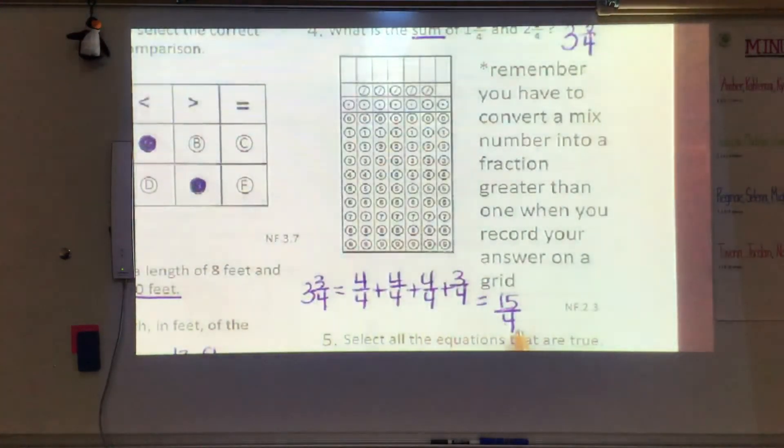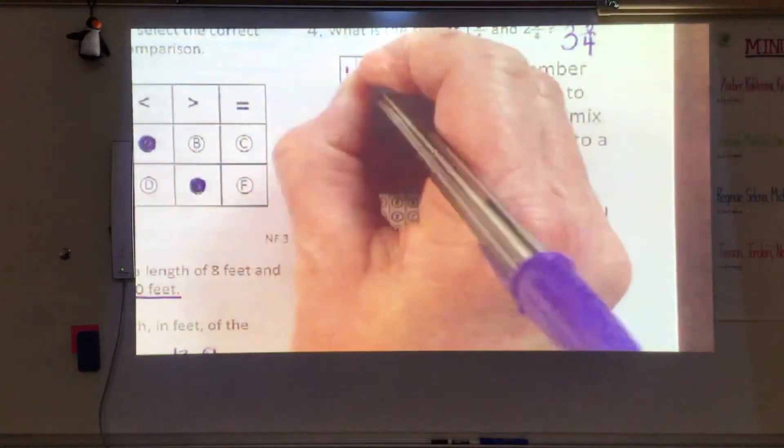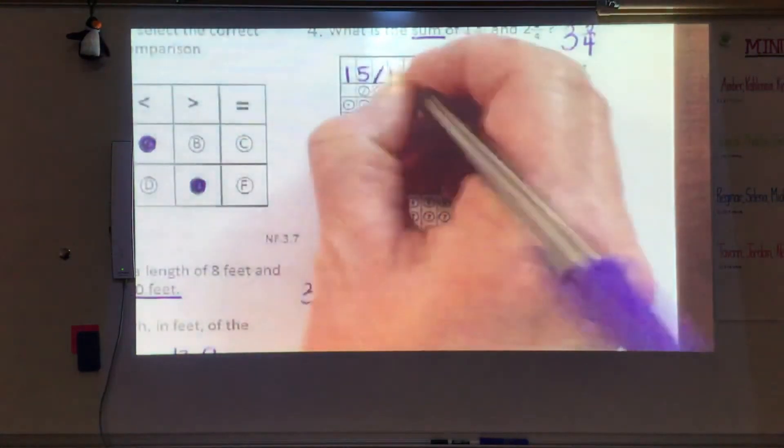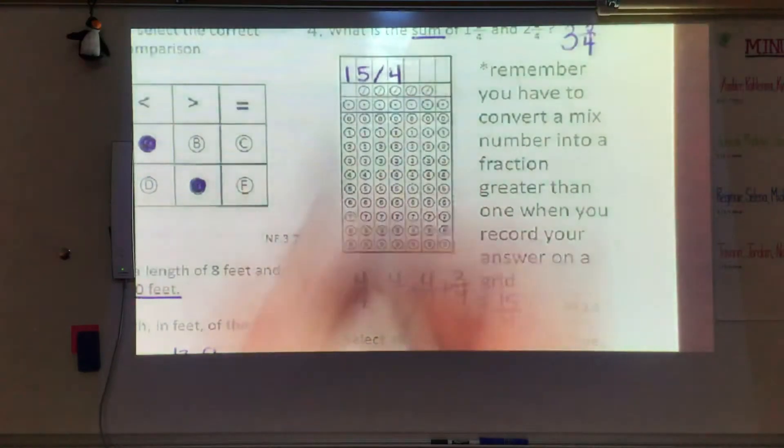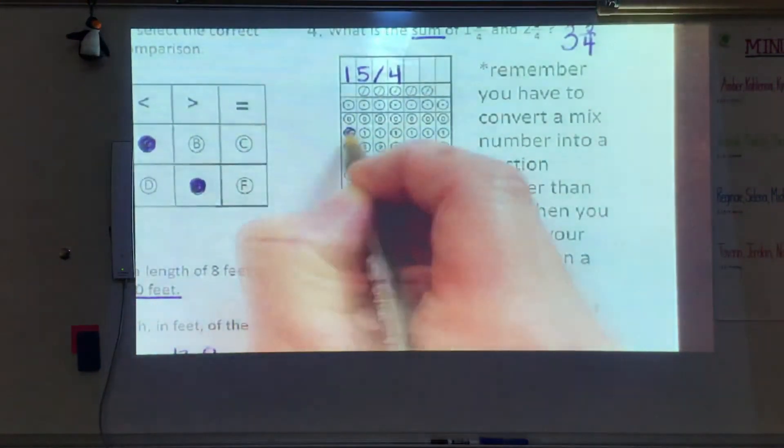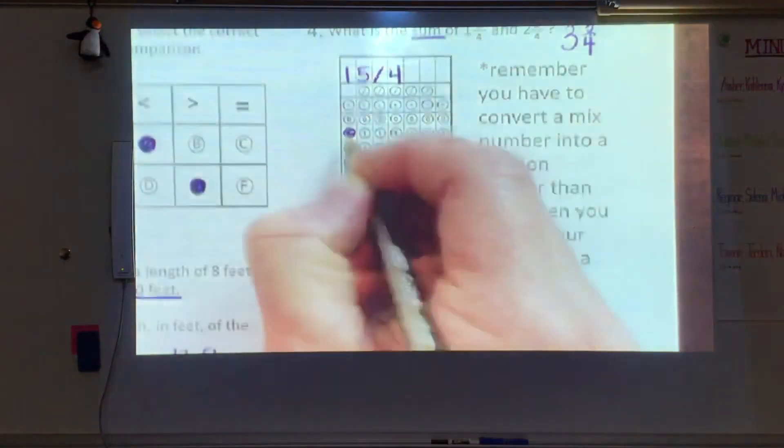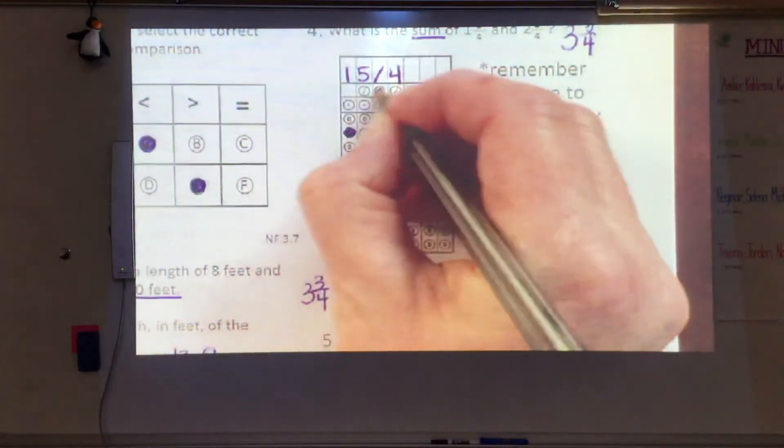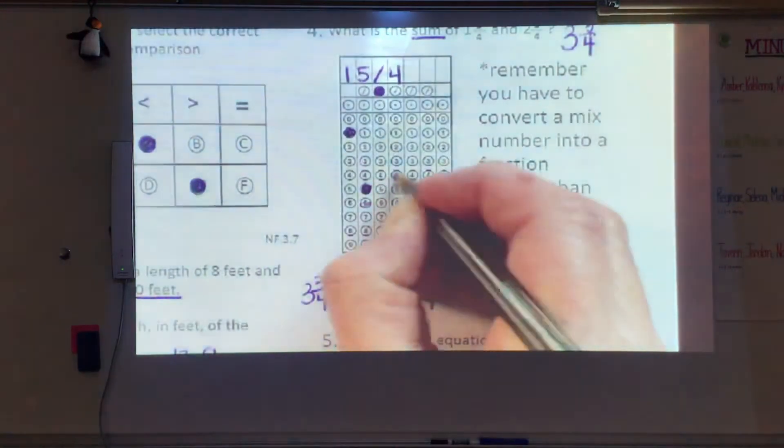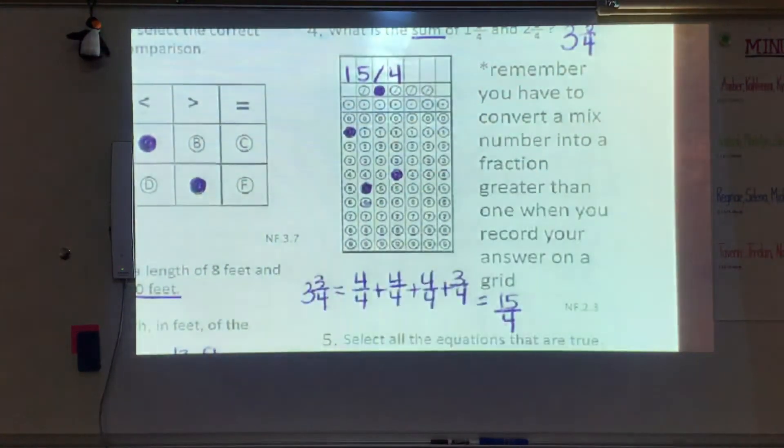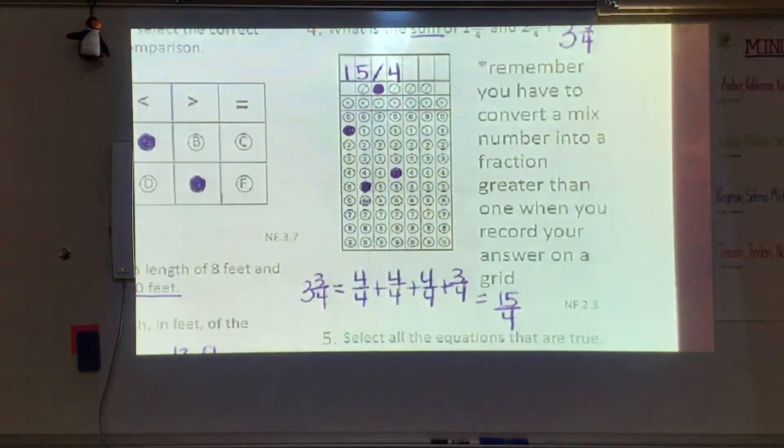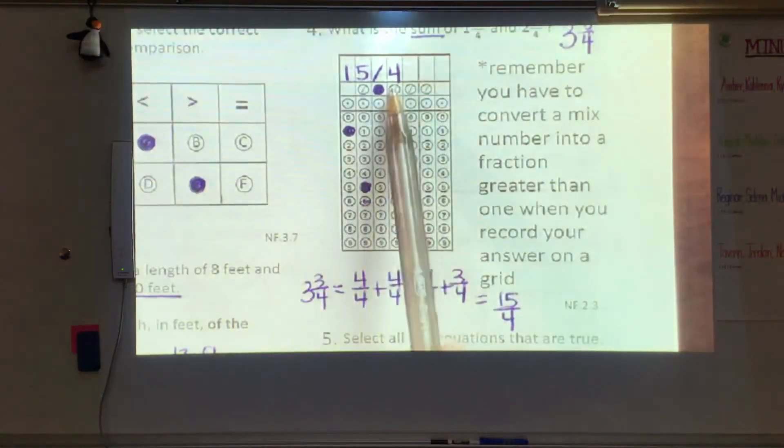Now, if I want to write that in my grid up here, I put 1, 5, slash, 4. And then we just go in and bubble in the correct bubbles. Don't bubble in anything else. I almost bubbled in the wrong one there. 1, 5, slash, 4. Don't bubble anything else. It's only the boxes that you filled in. Good job.